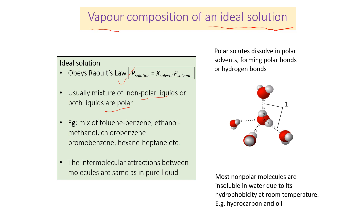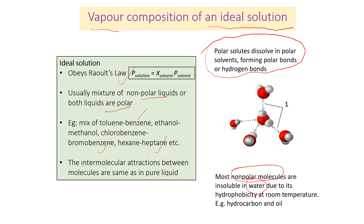Examples include the mixture of toluene and benzene, ethanol and methanol, chlorobenzene and bromobenzene, and hexane and heptane. We must also consider that a polar solute dissolves in a polar solvent forming polar bonds or hydrogen bonds. Most non-polar molecules are insoluble in water because water is a polar molecule and non-polar molecules have the characteristic of being hydrophobic at room temperature — for example, hydrocarbons and oil.